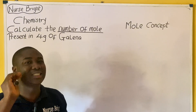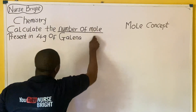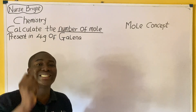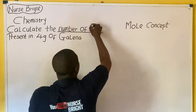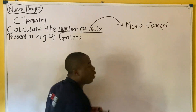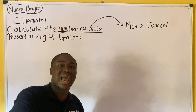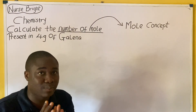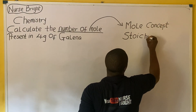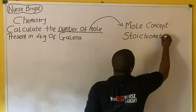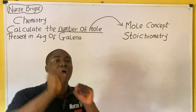There's something very vital to note: this question is asking us to determine the number of moles. Since this question asks us to determine number of moles, it is on the aspect called mole concept. Mole concept as a concept in chemistry falls under a broader aspect called stoichiometry.